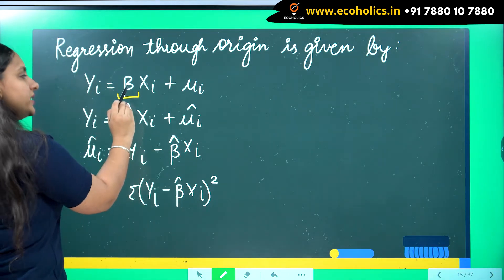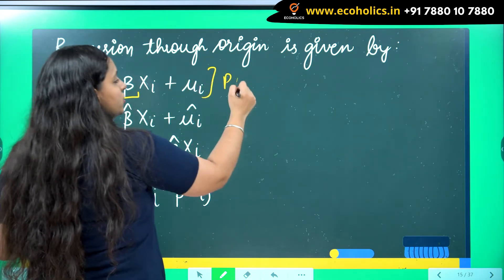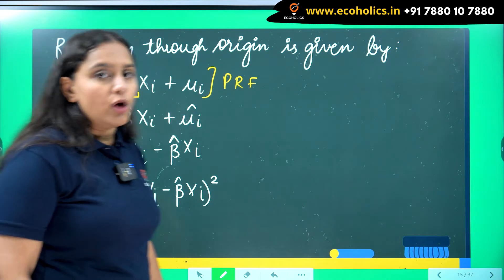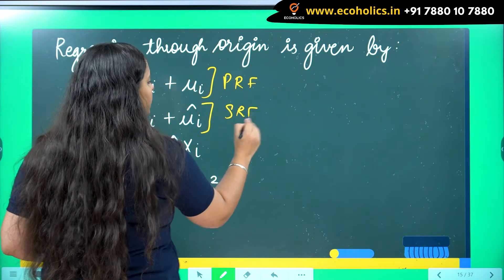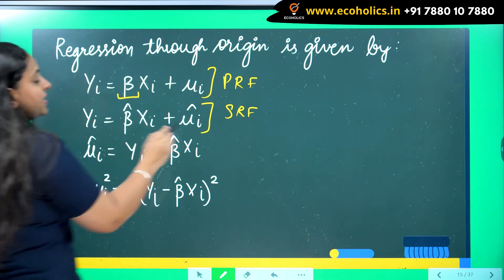So yi equals to beta xi plus mu i. This is the population regression function. Now to estimate it, I have to take help of sample regression function, which is written as yi equals to beta hat xi plus mu i hat.